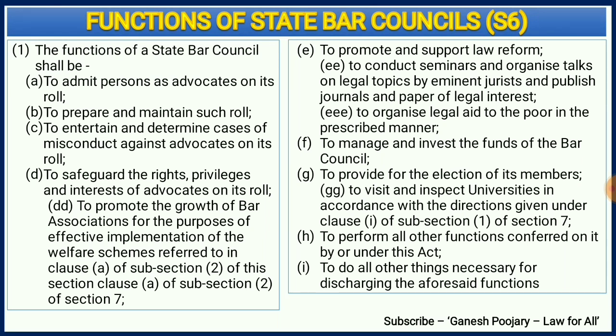Section 6 discusses about the functions of state bar councils and is one of the most repeated questions in any exam. The first and foremost function is to admit persons as advocates. A person finishing a graduation and then a 3-year law course, or doing 10+2 and then a 5-year law course, becomes a lawyer. After completing a law degree, the bar council conducts an exam; those who pass pay a fee to become members of the bar council, and once they become members they become advocates.